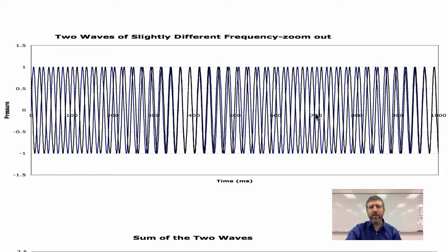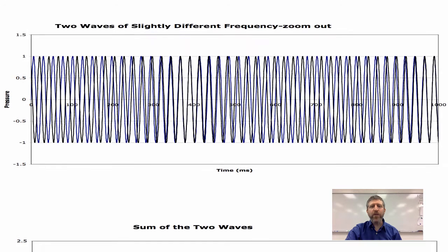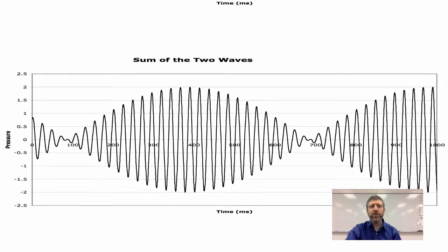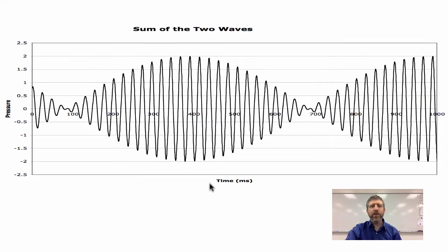So at 700 milliseconds, compression hits rarefaction. At 1,000 milliseconds, compression meets compression and rarefaction meets rarefaction. This graph shows the sum of the two waves. Where the compression hit the rarefaction at 100 milliseconds, the waves cancel out and there's silence. Where compressions and rarefactions match, the waves add up to an even bigger compression and rarefaction — that's where the sound is loudest. Again at 700 they cancel, and at 1,000 milliseconds they're in phase and loud again.